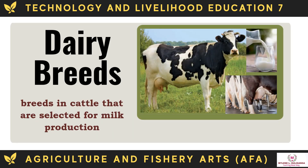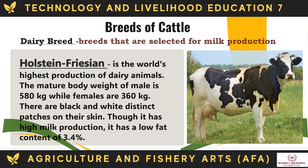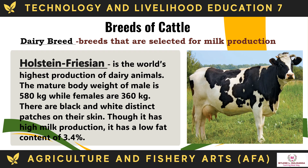The dairy breeds of cattle are breeds selected for milk production. The Holstein Frisian is the world's highest-production dairy animal. The mature body weight of the male is 580 kg, while females are 360 kg. They have black and white distinct patches on their skin. Though it has high milk production, it has a low fat content of 3.4%.